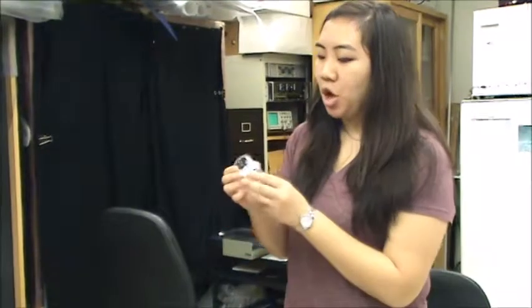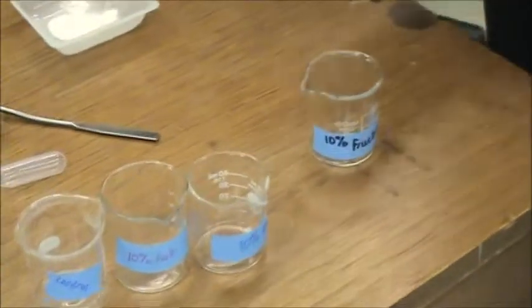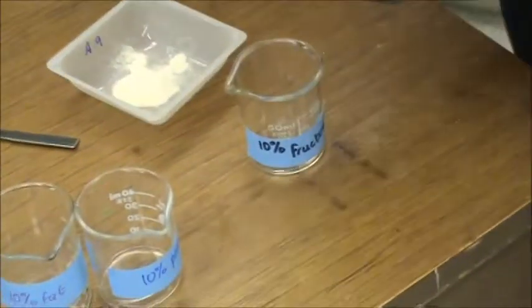So the first thing you want to do after you've collected all of your ingredients is label all of your beakers. So since we have 10% fructose, I've already labeled a beaker and you just put both the fructose and the agar into the beaker.